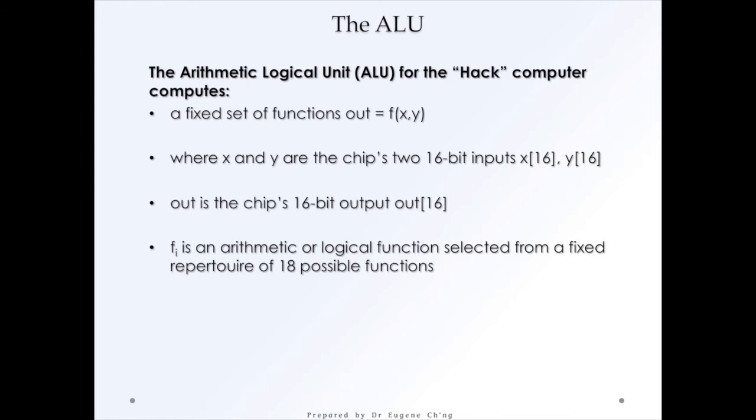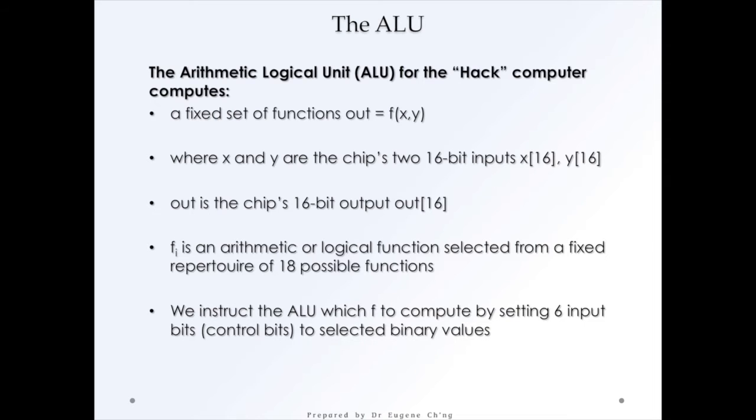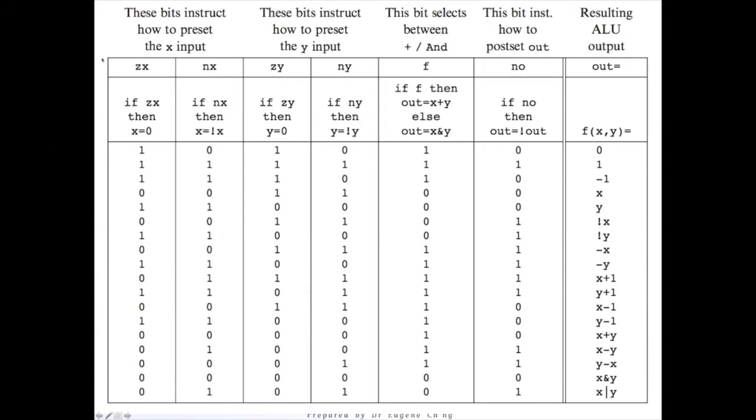And F is an arithmetic or logical function selected from a fixed repertoire of 18 possible functions. So we instruct the value which F to compute, which function to compute, by setting six input bits, control bits, to selected binary values. So over here, we have the six control bits. And each of them we call an event, or we call it a control bit. They operate on the value which comes in.